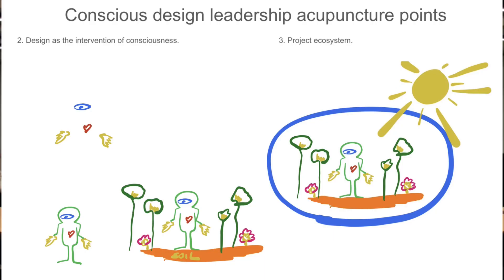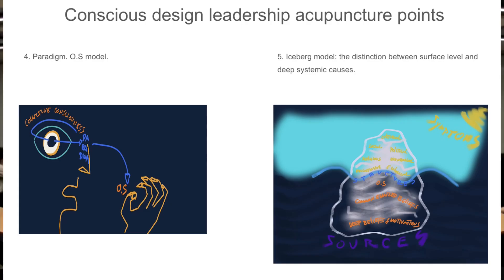Second: design of the intervention of consciousness — the point of view. Third: project ecosystem. Fourth: paradigm. Fifth: the iceberg model. You have the document about the iceberg and the iceberg theory on the blackboard, and we have been referring to the iceberg on several occasions.